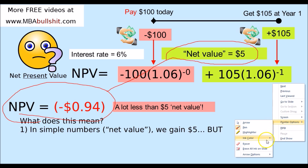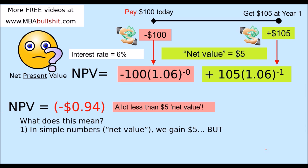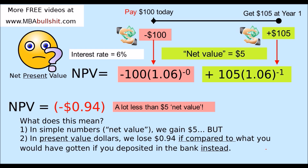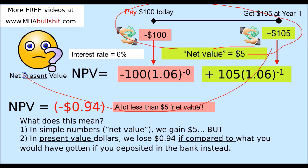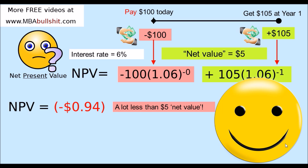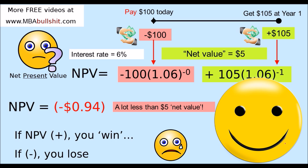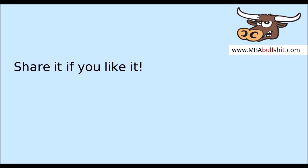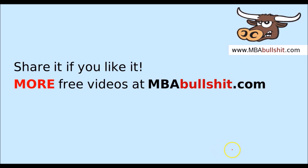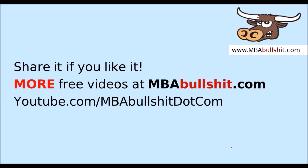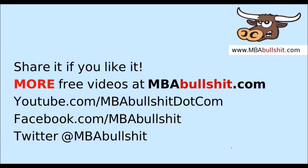So what does this mean? In simple numbers, we gain $5. But in present value dollars — taking the value of this money today into account — we actually lose 94 cents compared to what you would have gotten if you deposited your money in the bank instead. To summarize: if net present value is positive, you win. If it's negative, you lose. I hope you enjoyed it — please share if you like it, and visit MBAbullshit.com for more free videos. Have a great day!